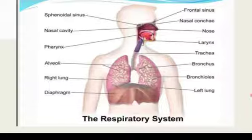At the end of each bronchiole, there is a balloon-like structure called alveoli. In this way, oxygen comes inside the body and carbon dioxide goes out. You can also see the diaphragm, which plays a very important role in inhalation and exhalation.